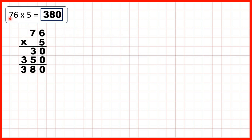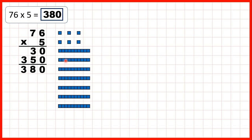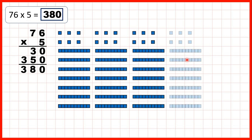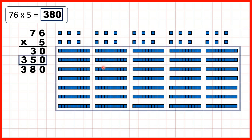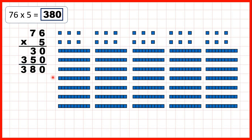Then we had 76 times 5. We can represent 76 as 7 tens and 6 ones. We're multiplying by 5, so we can show 76 five times. Altogether, we have 30 ones, which is why we write 30 as our first answer line. And then below we have 35 tens, so that's 350, because we could regroup these tens into 300 and 5 tens. So that means we have 380 altogether.